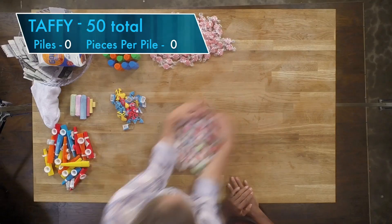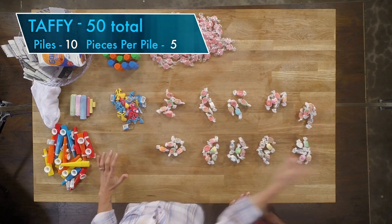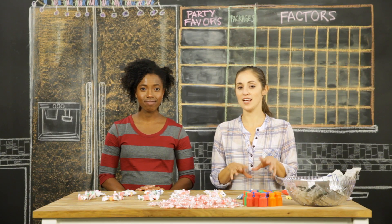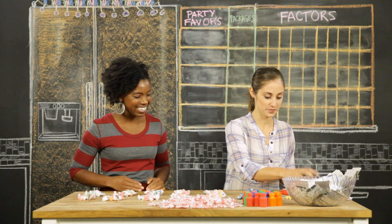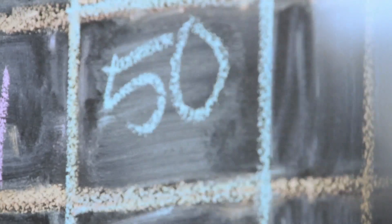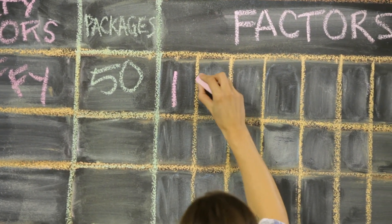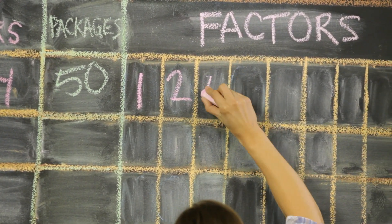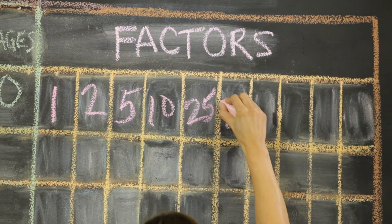But we can also divide each of these in half. 10 is a factor of 50, with five taffies in each pile. One and 50 are also factors, because one is a factor of any number, and so is the number itself. So the factors of 50 are: one, two, five, 10, 25, and 50.